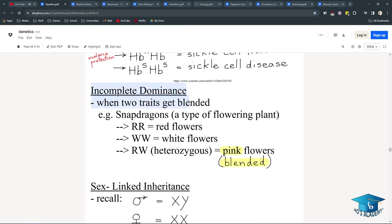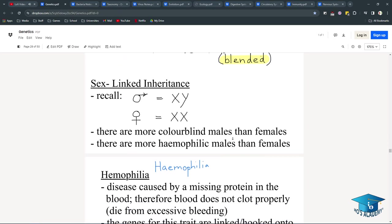Incomplete dominance is when two traits get blended up. So unlike the cow that showed both traits at once, snapdragons, a type of flowering plant, show red flowers and white flowers, but when together, they're pink flowers, a blend.